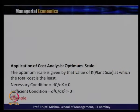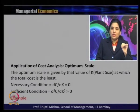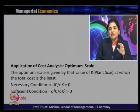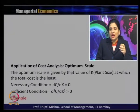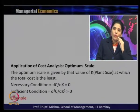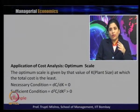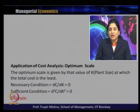Now we look at the application of cost analysis in case of optimum scale. In the first case we discussed optimum output, then optimum inventory level, and now we identify the plant size — the optimum scale of operation — where the firm should operate. The optimum scale is given by the value of K, the plant size, at which total cost is the least.